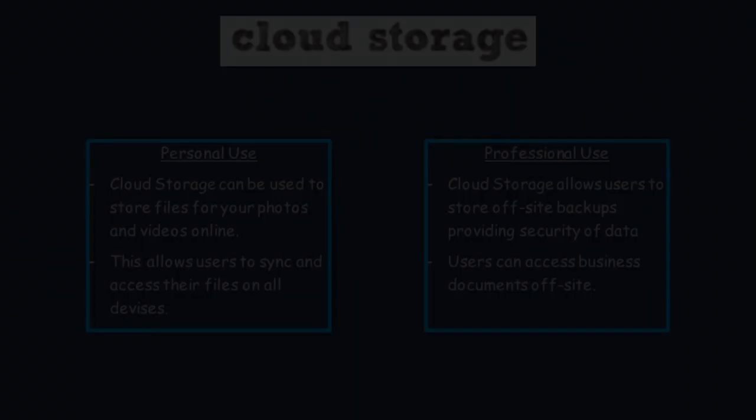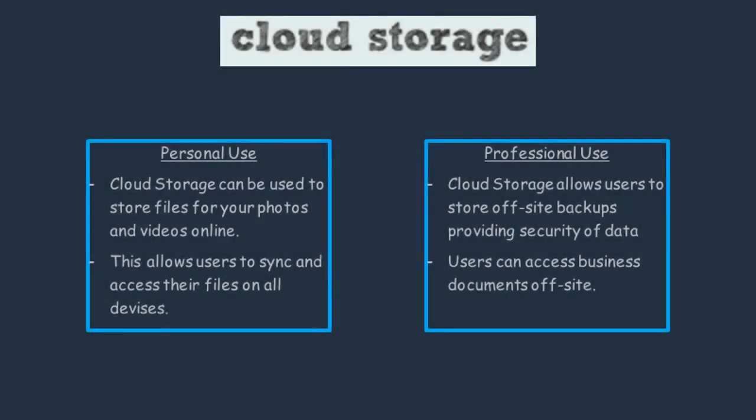The first online system we're going to talk about is cloud storage. Individuals and businesses can use cloud storage services to back up their data, safe from natural disasters. Individual people might use cloud storage to save their photos and videos online, and it lets them sync and access all their devices together. Businesses might use cloud storage to save their data online as an off-site backup, providing security of their data, and it's also beneficial for employees because they can access their documents from home.